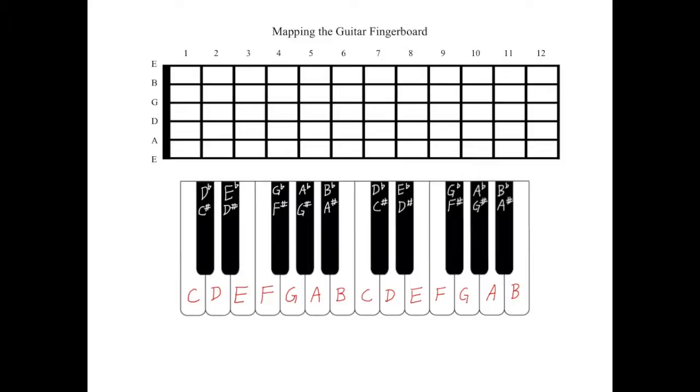Let's compare a piano diagram to a diagram of the guitar fingerboard. If we start on E on the piano, we can see that the closest note to the right is F. Therefore, F is a half step higher than E. On the guitar fingerboard, E is the highest open string. Since each fret represents a half step, an F note would be played by pressing down the string at the first fret.